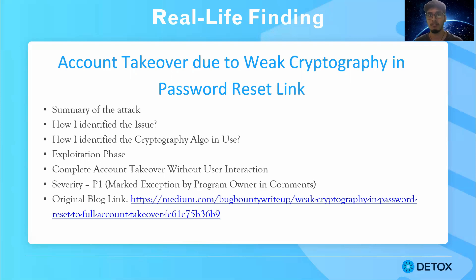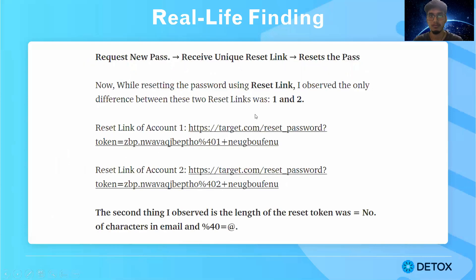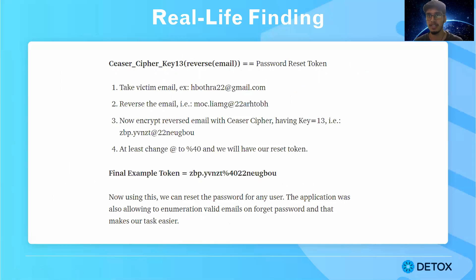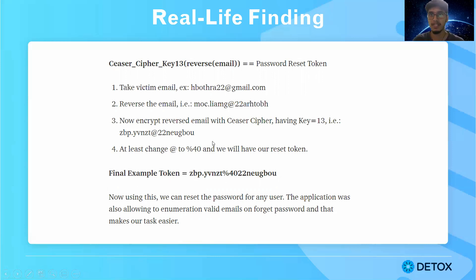The next part was to identify what kind of algorithm is in use and how to exploit it. Let's say there's a victim account hbosara22@gmail.com — first reverse the email. Then encrypt this reversed email with Caesar cipher with key 13, which means shift each character 13 places. You will get a token, then replace the @ with %40 and you have your password reset token. Spending around 15 to 20 minutes, I deduced this formula: take an email, reverse it, use Caesar cipher with key 13 (ROT13), and it gives you the password reset token.